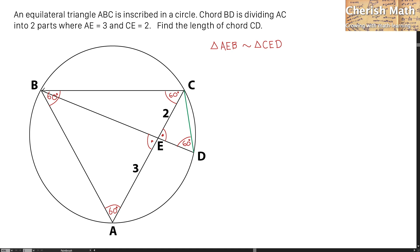The length of AB is 3 plus 2, and that is 5 units. By using the idea of similarity, since we came to know that triangle AEB is similar to triangle CED,